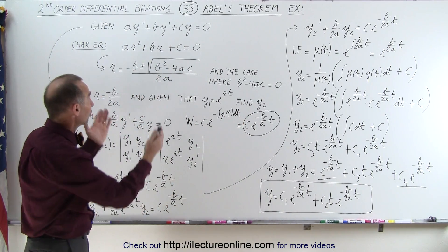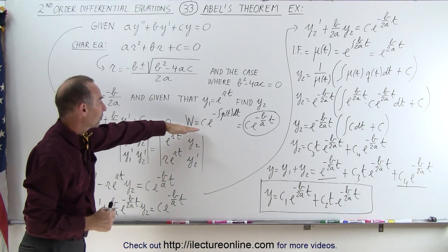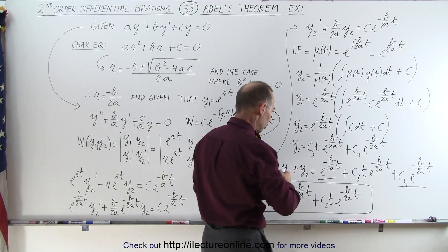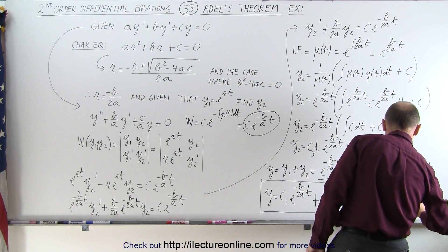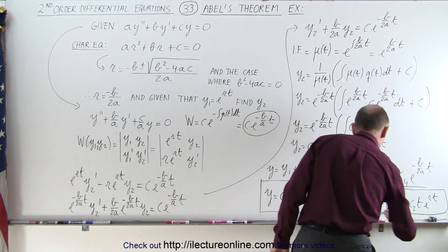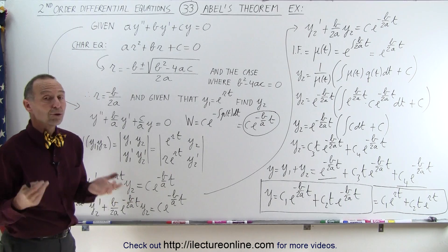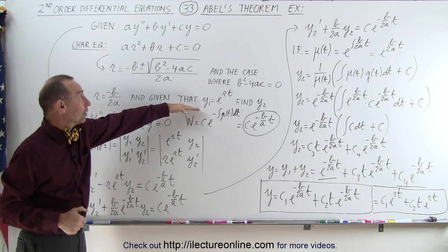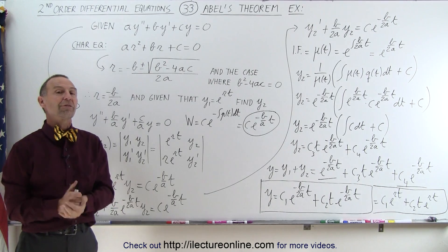We found this general solution using Abel's Theorem and the concept of the Wronskian. Since minus b over 2a is simply the repeated root r, we can also write this as c1 times e to the rt plus c2 times t times e to the rt. Notice how useful the Wronskian can be: if you already know one solution, Abel's Theorem and the Wronskian can be used to find the other part of the solution to the original differential equation. And that's how it's done.